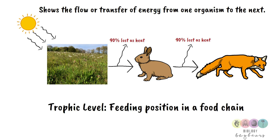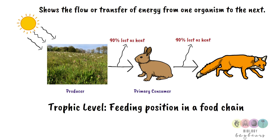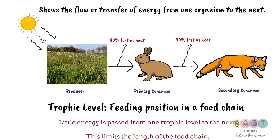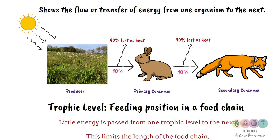The trophic level is the feeding position in a food chain. You always start with the producer, then the primary consumer, secondary consumer, and so on. Because very little energy is passed from one trophic level to the next, this limits the length of the food chain — and this is a common exam question.